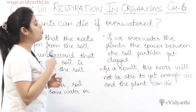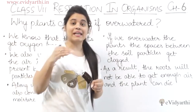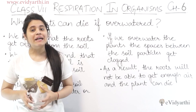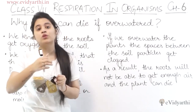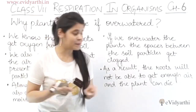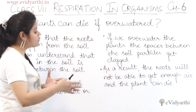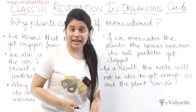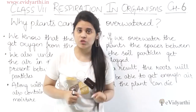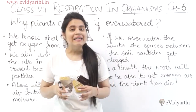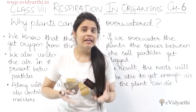If we overwater the plants, the spaces between the soil particles get clogged. If we have more water, then the spaces between the soil particles will be closed, and the oxygen will be blocked. As a result, the roots will not be able to get enough air, and the plants can die.